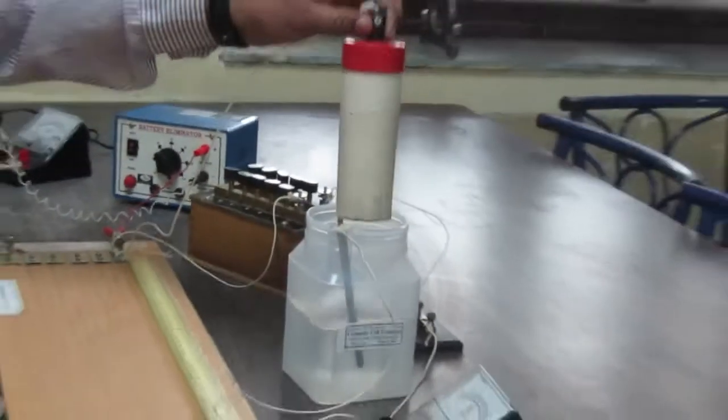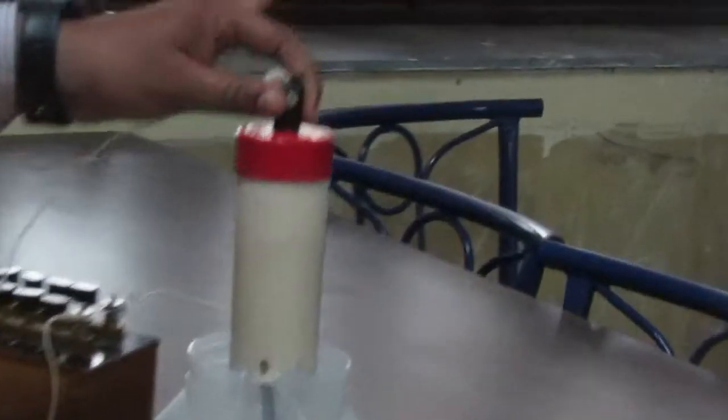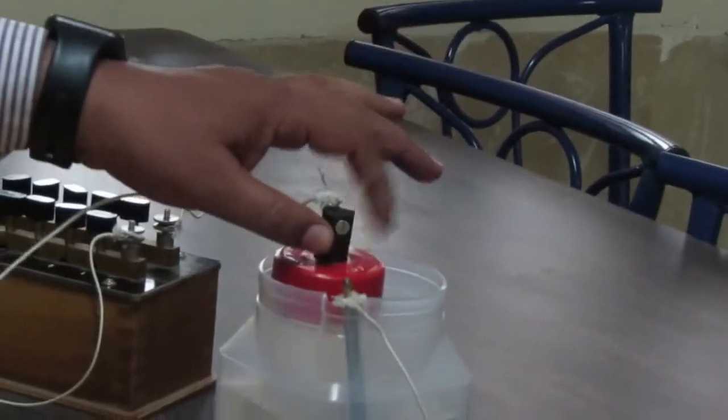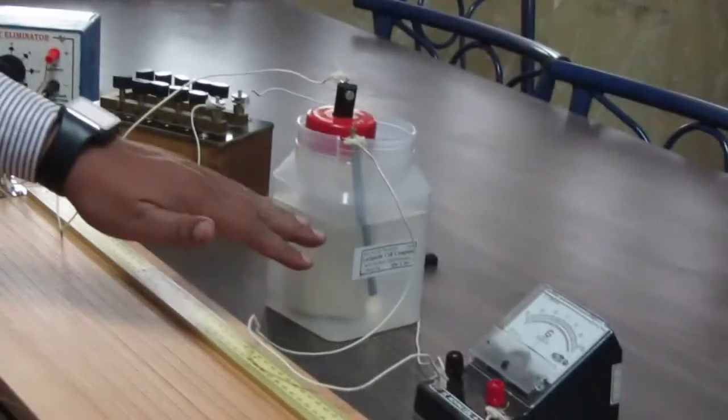This is the Leclanche cell's positive end. We have the beaker with ammonium chloride solution inside.